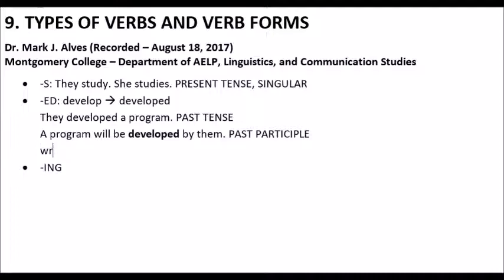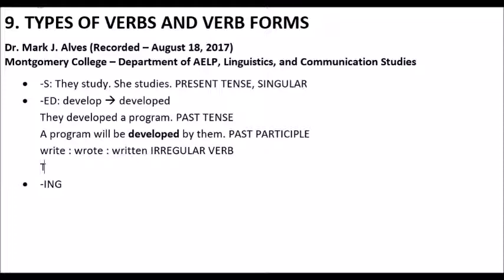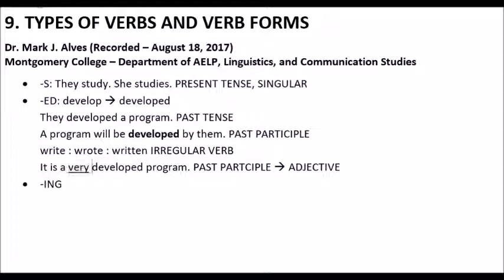It's parallel to write, wrote, written. That written form is called an irregular verb. Developed is just a regular verb with that ED form instead. One more way we can use them is like this: it is a very developed program. We still call this a past participle, but it functions as an adjective. We can see the very in front of it and a noun going after it.